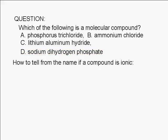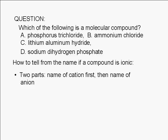We can easily tell from the name of a compound if it is ionic. The name of an ionic compound consists of two parts. The first part is always the name of the cation, and the second part is the name of the anion.